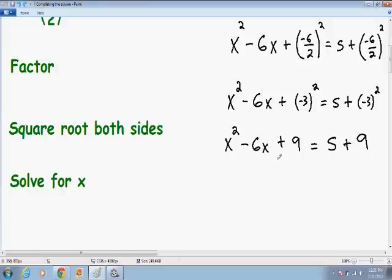x squared minus 6x plus 9 is a trinomial which can be factored very easily into x minus 3 times x minus 3 and that is equal to 5 plus 9 which is just 14.